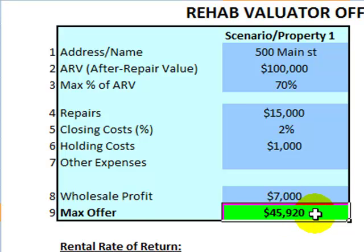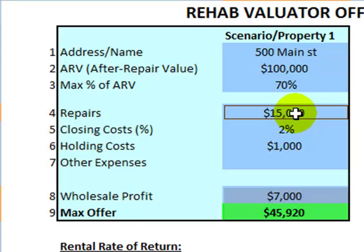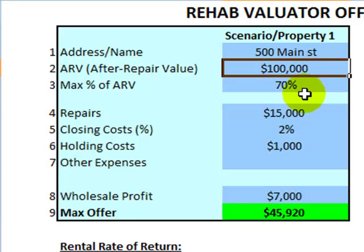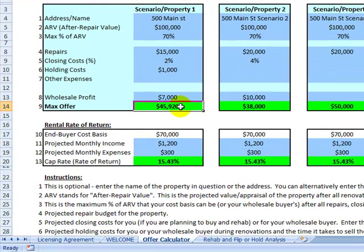You pay your motivated seller roughly $46,000 for the property, then assign the contract to your wholesale buyer for $7,000. Your wholesale buyer's cost basis is roughly $53,000 plus $15,000 in repairs, closing costs, and holding costs — a total cost basis of right around $70,000, which is 70% of $100,000. Your wholesale buyer can rehab the property, put it on the market for $100,000, and hopefully make around a $30,000 profit minus concessions and closing costs.